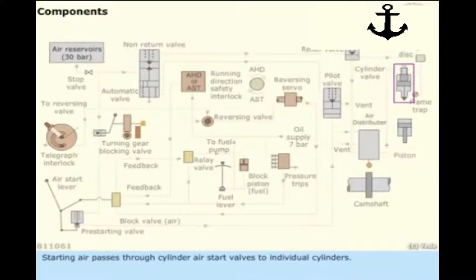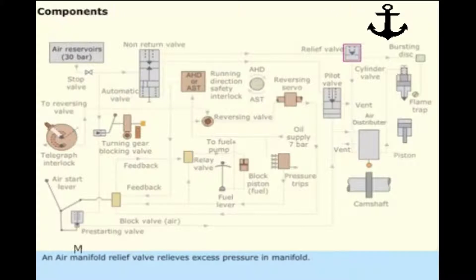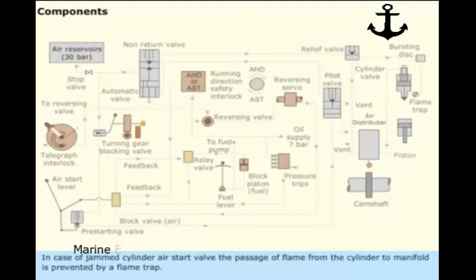Starting air passes through cylinder air start valves to individual cylinders. An air manifold relief valve relieves excess pressure in the manifold. In case of a jammed cylinder air start valve, the passage of flame from the cylinder to the manifold is prevented by a flame trap.